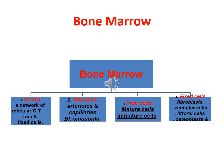This diagram summarizes the components of bone marrow, which is formed of stroma, blood vessels, free cells, and fixed cells.